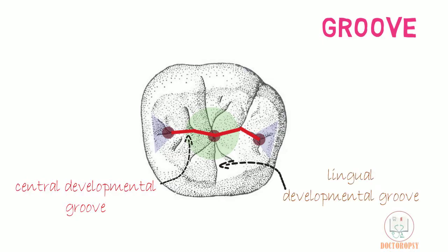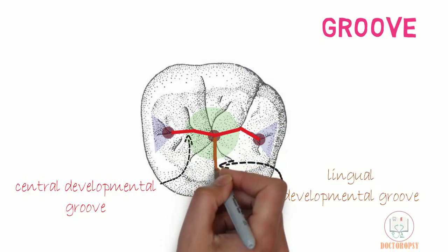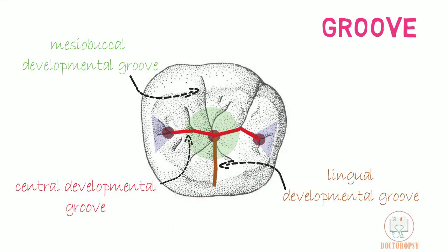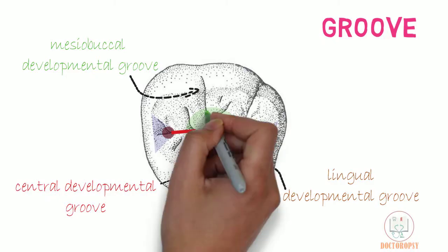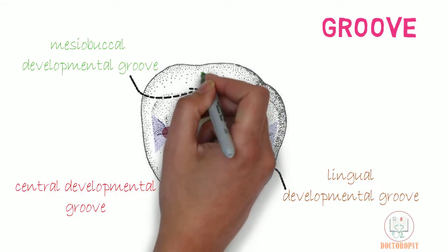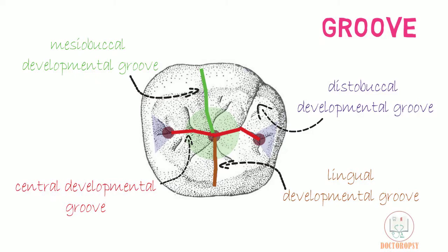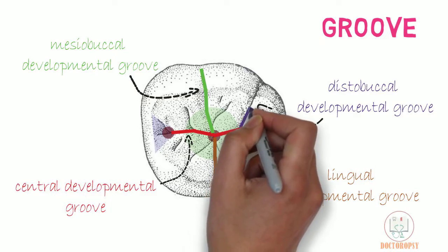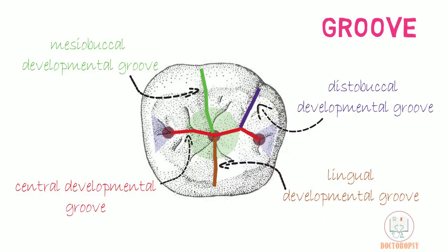The lingual developmental groove originates from the central pit and runs lingually between the lingual cusps onto the lingual surface. The mesial buccal developmental groove also originates from the central pit and runs buccally between the mesial buccal cusp and distal buccal cusp onto the buccal surface. The distal buccal developmental groove originates from the central developmental groove slightly distal to the central pit and runs buccally between the distobuccal cusp and distal cusp onto the buccal surface.